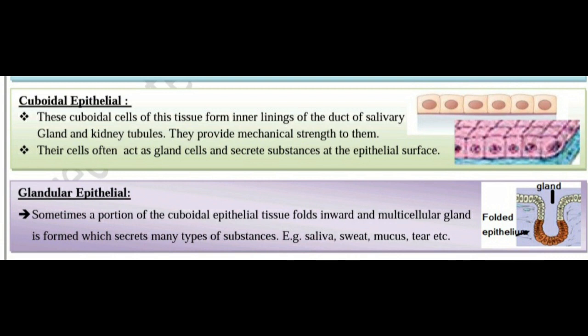Differentiating between glandular and cuboidal epithelial tissue: cuboidal epithelial cells form the inner lining of the duct of salivary glands and kidney tubules, providing mechanical strength. Their cells often act as gland cells and secrete substances at the epithelial surface. Glandular epithelial: sometimes a portion of the cuboidal epithelial tissue folds inward and a multicellular gland is formed, which secretes many types of substances such as saliva, sweat, mucus, and tears.